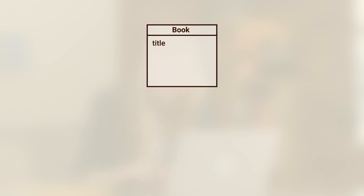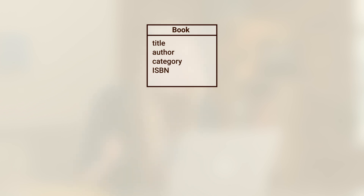I can start listing out the attributes that are actually relevant in the library scenario. Basically, in a library, it's important that a book have a title, an author, a category, and an ISBN, which stands for International Standard Book Number — you can think of it as a type of universal book ID. A book can also have many other things like an illustration or a version number, but at the moment these aren't important attributes for our library system, or at least not yet.